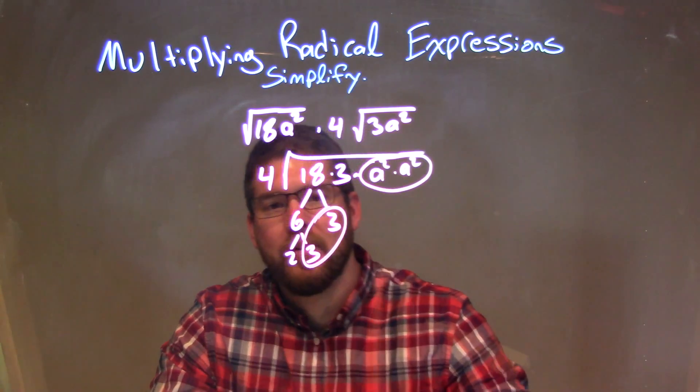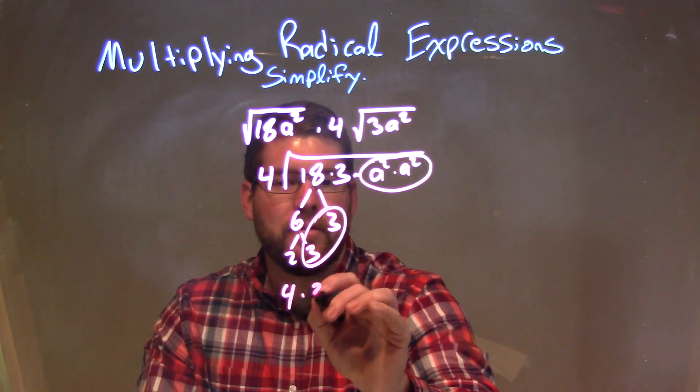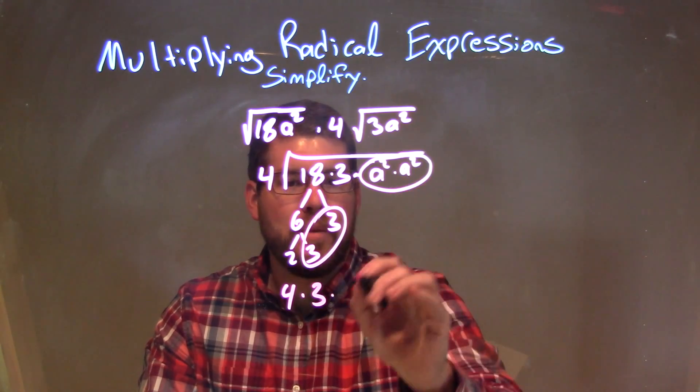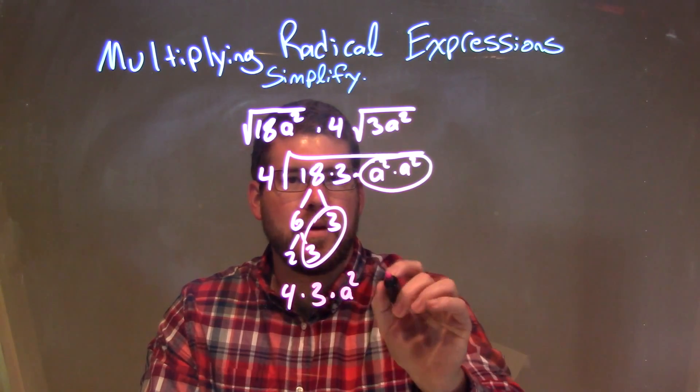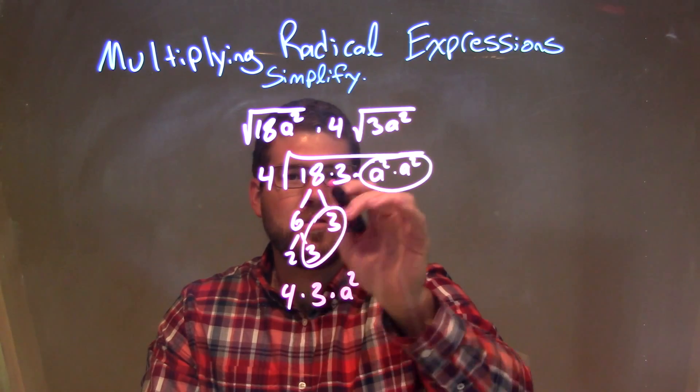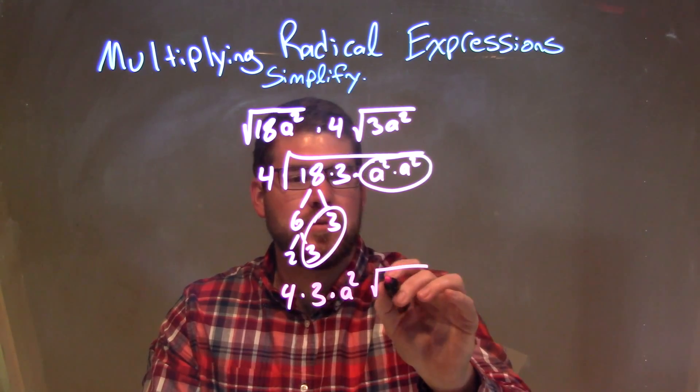So we bring our pairs and put them on the outside. We have 4 times the 3, that pair, times my pair of a². What's left then is just the singles, 2 times 3, inside the square root.